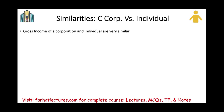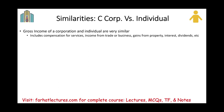Starting with similarities: gross income of a corporation and an individual are very similar. The IRS's goal is to collect as much money as possible, so practically everything is included in gross income unless it is specifically excluded. It's a broad definition that includes compensation, income from trade, gains from property, interest, dividends — everything is included. Corporations have a few exclusions, but unless income is clearly excluded, it must be included.